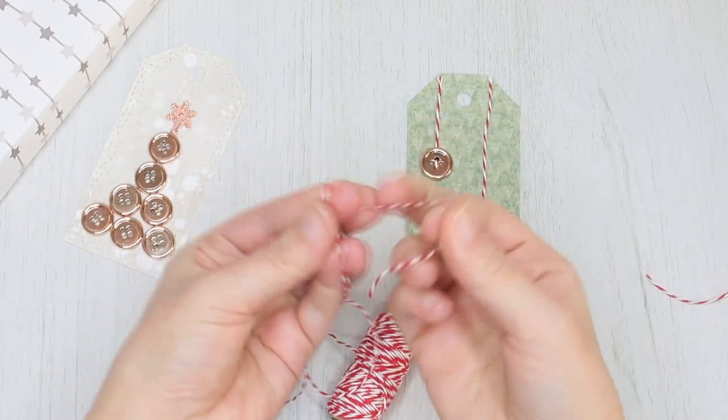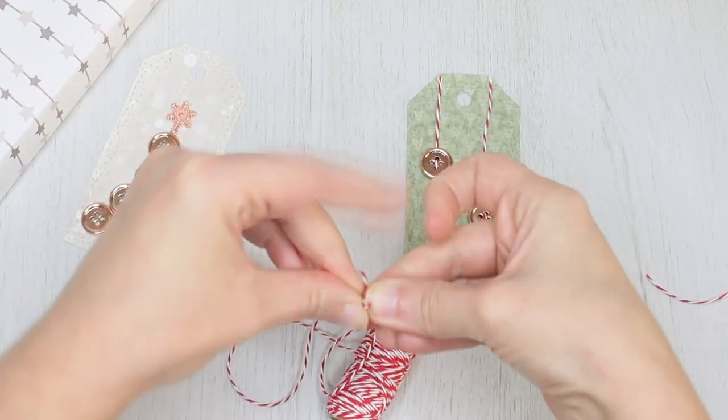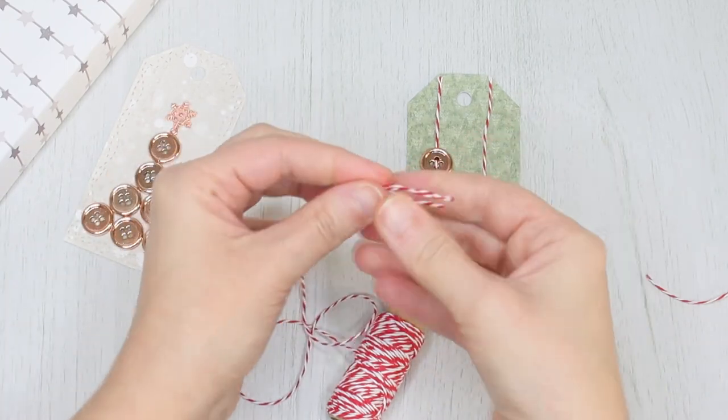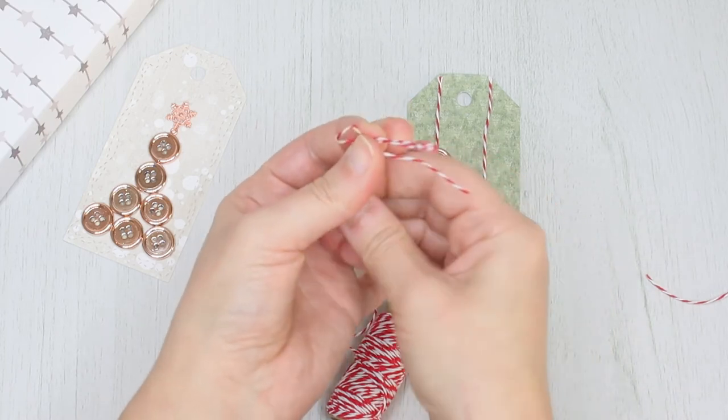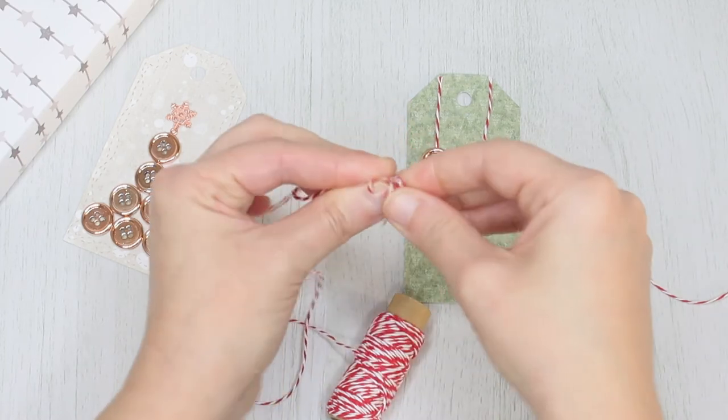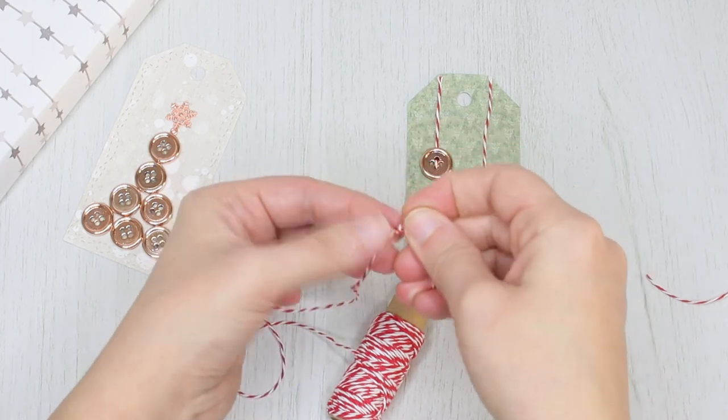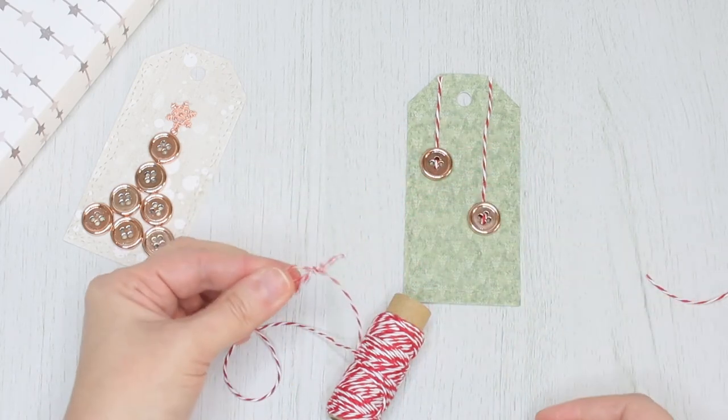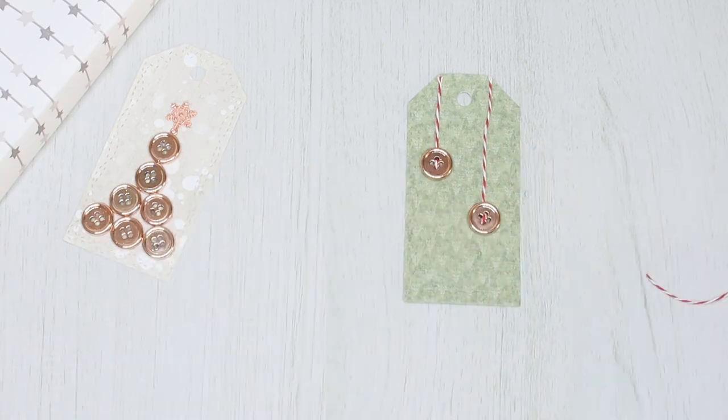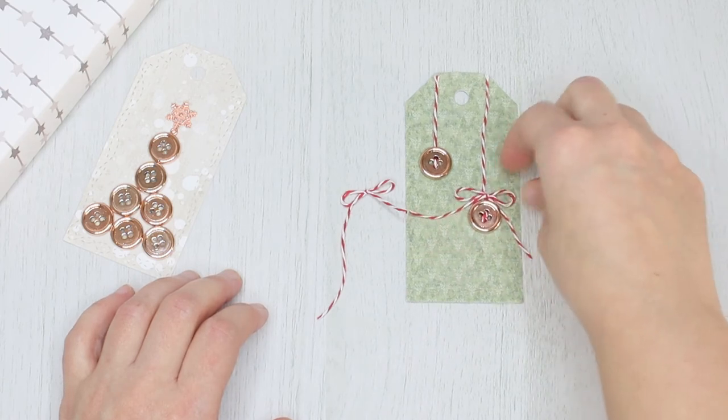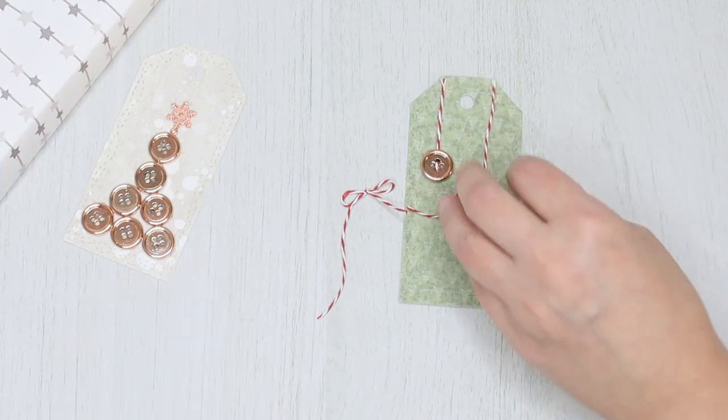Then I decided to make a bow for each bauble using the same twine. So take the twine, bunny ear, bunny ear, tie them together and you have a bow. Then I glued the tiny bows on top of the baubles.